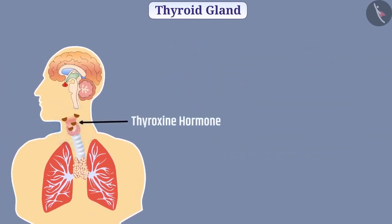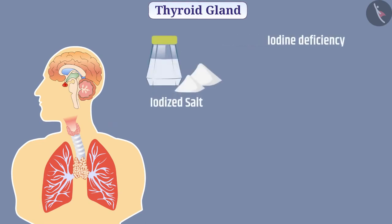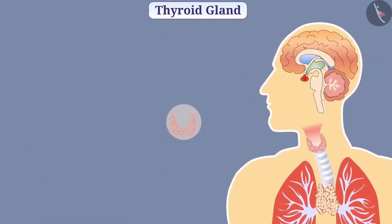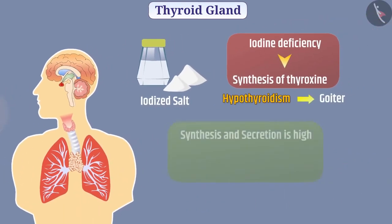The thyroid gland synthesizes thyroxine hormone with the help of iodine, so iodine is required for synthesis of thyroxine at normal rates. Therefore, we should take iodized salt. Iodine deficiency reduces the synthesis of thyroxine, known as hypothyroidism, and leads to the disease called goiter. In this disease, there is a growth of the thyroid gland and swelling in the neck. If the synthesis and secretion of thyroxine is high in the body, the level of thyroxine is increased, which is called hyperthyroidism.